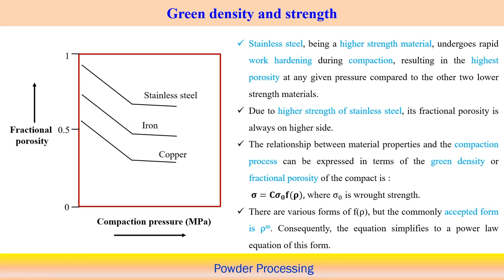Regarding fractional porosity: stainless steel, being a higher strength material, undergoes rapid work hardening. Stainless steel is an elastoplastic material and strain hardening is much more pronounced, so it very quickly reaches ultimate tensile strength. Therefore during compaction, work hardening effect is very significant for stainless steel, resulting in the highest porosity at any given pressure compared to other lower-strength materials.